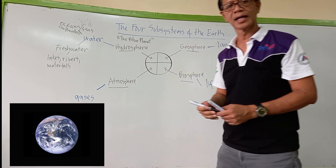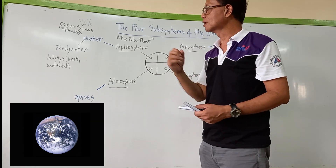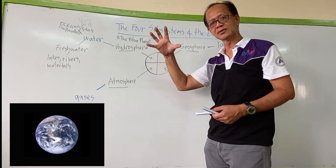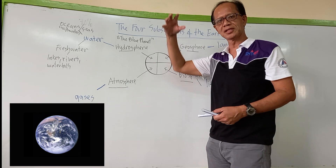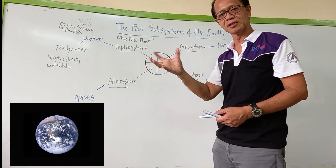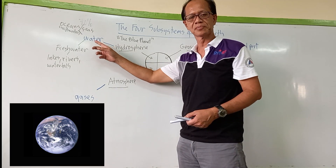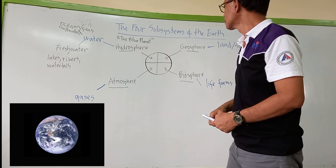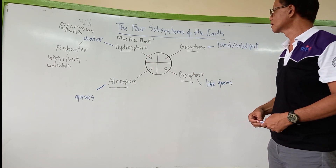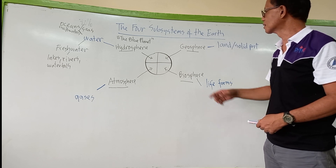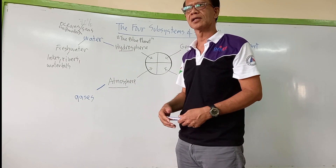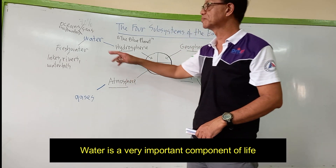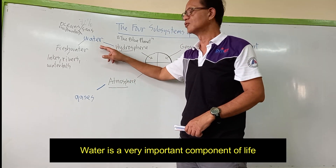That's why our planet Earth is usually called the blue planet. Why the blue planet? Because when you take a look at a picture of planet Earth — pictures taken by those who traveled to outer space far from the Earth — the Earth appears blue, because of the presence of water. Water is also an important component of life; that's why there is life on our planet.